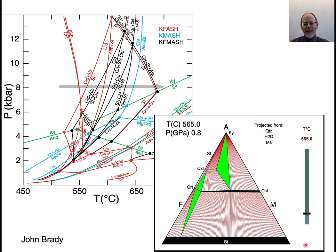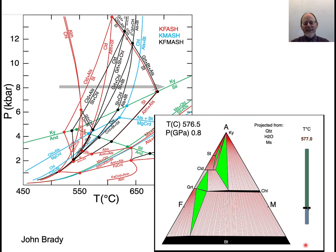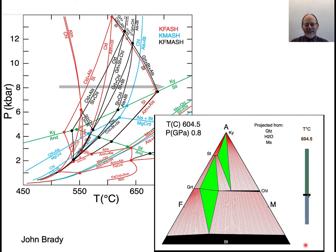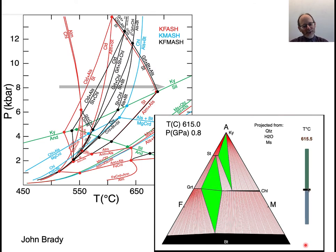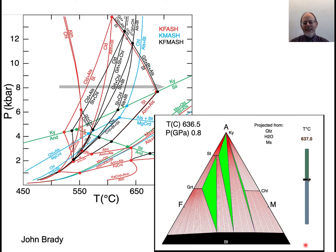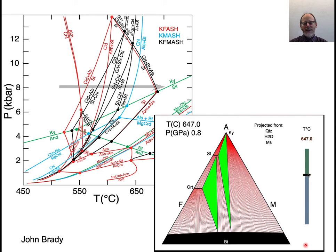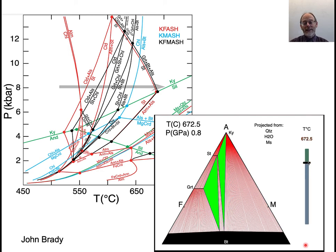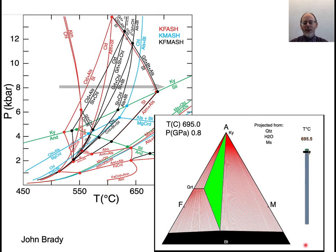So garnet comes in, staurolite comes in, crossing tie-line reaction, another crossing tie-line reaction, the terminal reaction, another crossing tie-line reaction, and then we lose chlorite. And we're going to lose staurolite as an interior phase. So then we're just left with kyanite, garnet, and biotite as the three-phase assemblage.